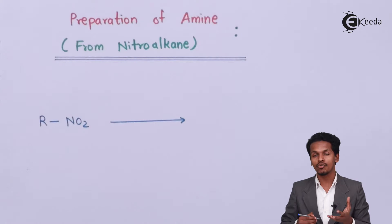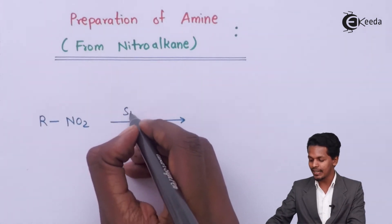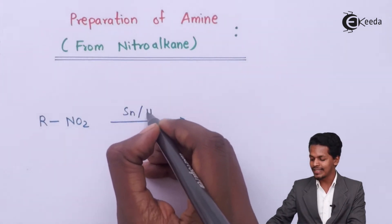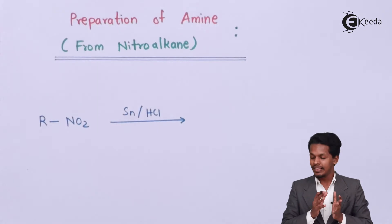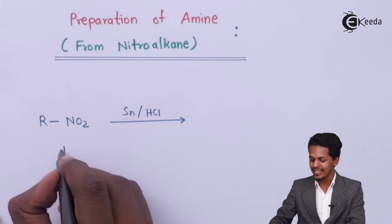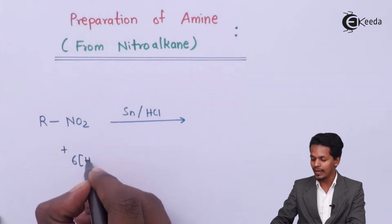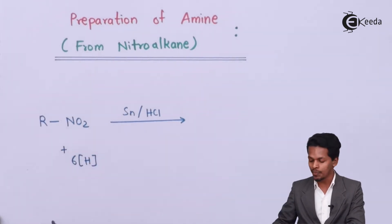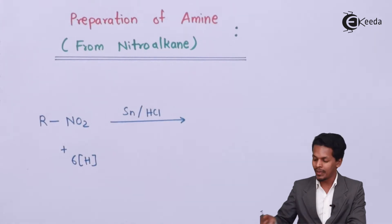convert this NO2 group into NH2 group, we have to take tin and react it with HCl. So the reaction of tin along with HCl will produce nascent hydrogens, and that is basically 6 nascent hydrogens. It will be involved in converting this NO2 group into basically NH2 group and this is what